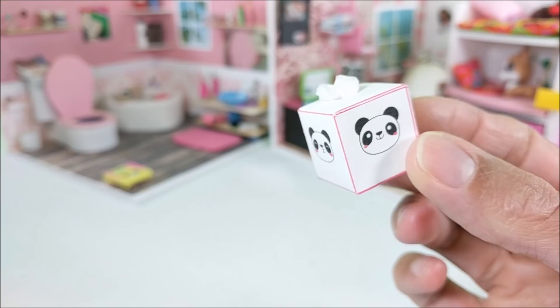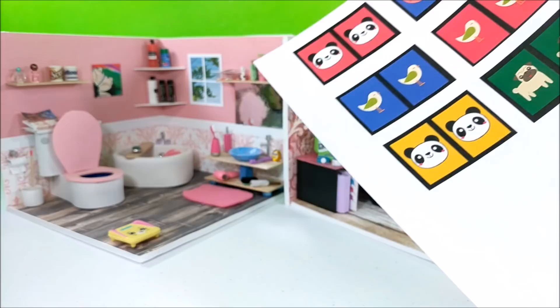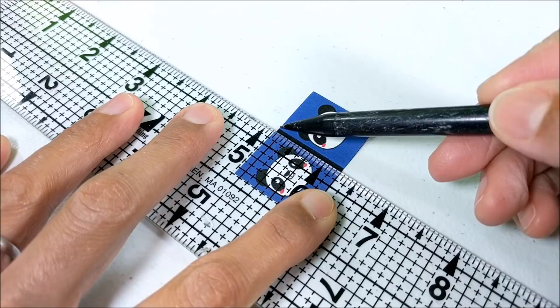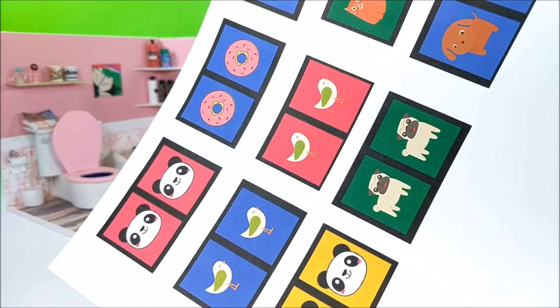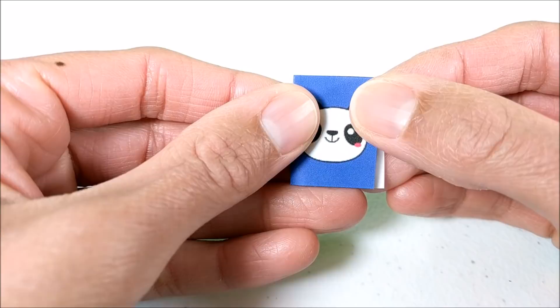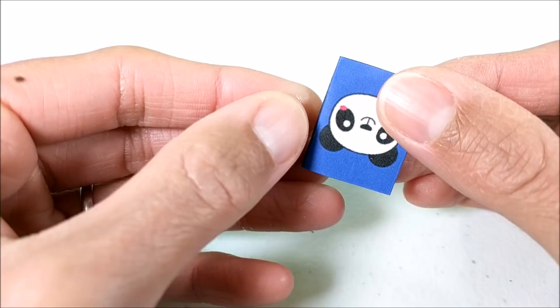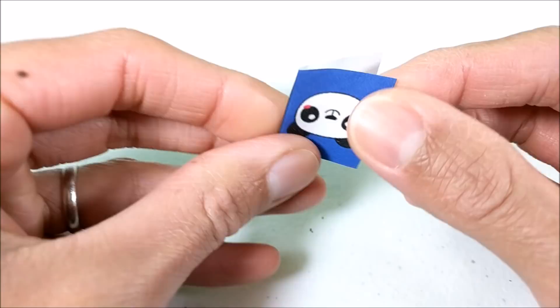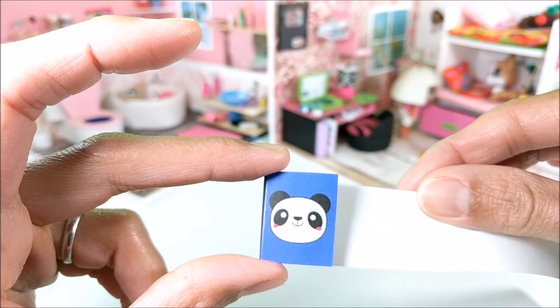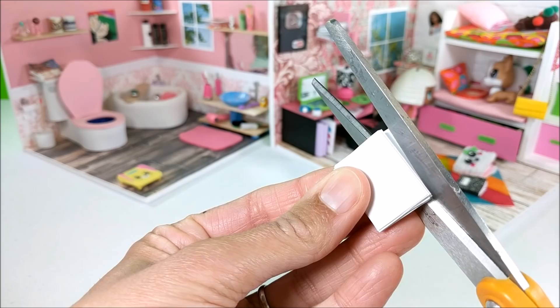Okay guys, for the panda notebooks, simply print the printable, which you can access by clicking on the link in the description section. Score on the lines for easier folding. Then cut out a strip of paper, fold accordion style, and glue.